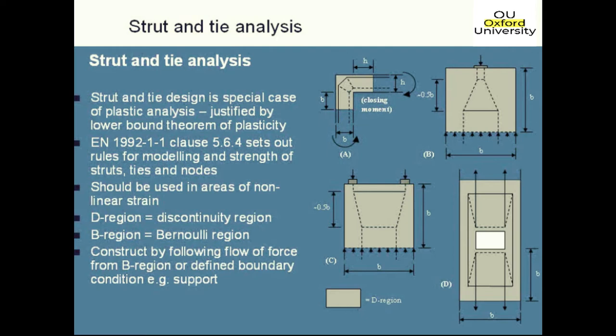You can determine the extent of the D-region by working from the disturbance. For example, for a load on top of a pier or a pre-stressing anchor, if we work from the discontinuity and come a distance away equal to the width of the section at that location, that defines the length of the D-region. The same applies for a hole — the hole is the discontinuity, the section width at that location is B, and going a dimension B longitudinally defines the end of the D-region.